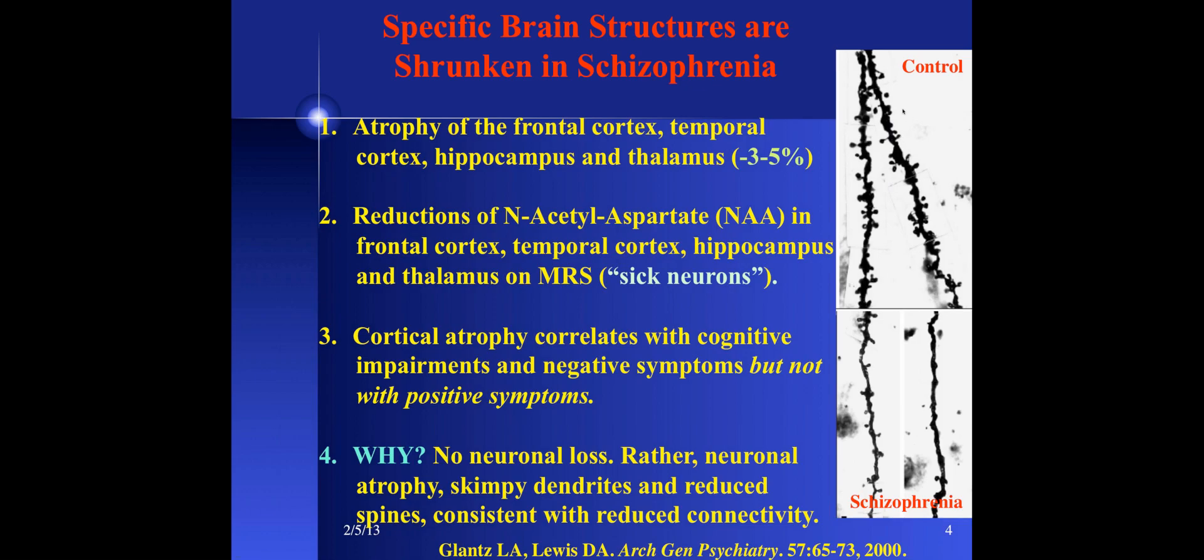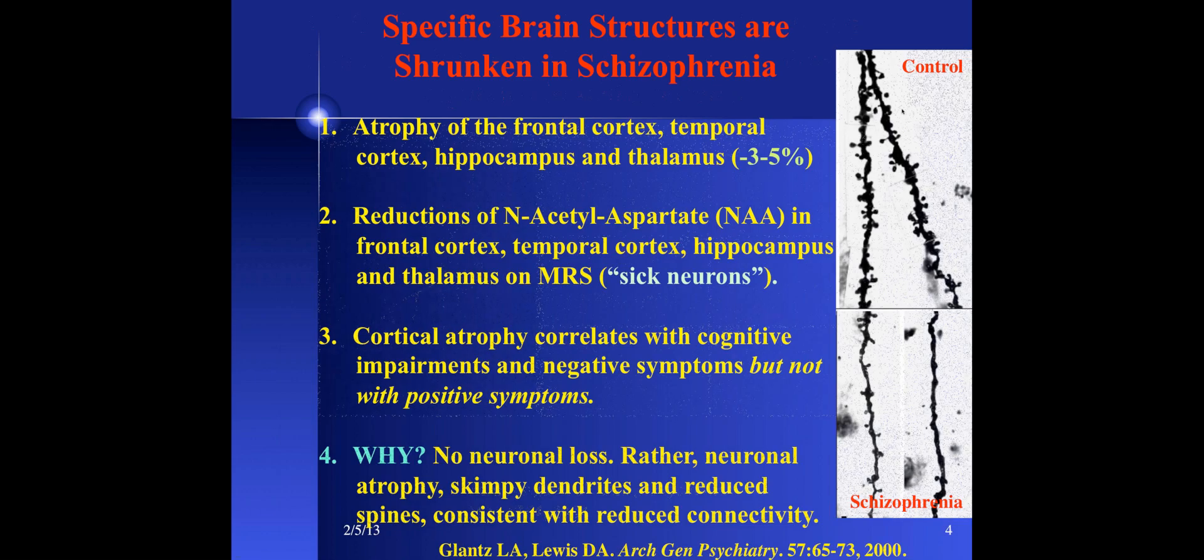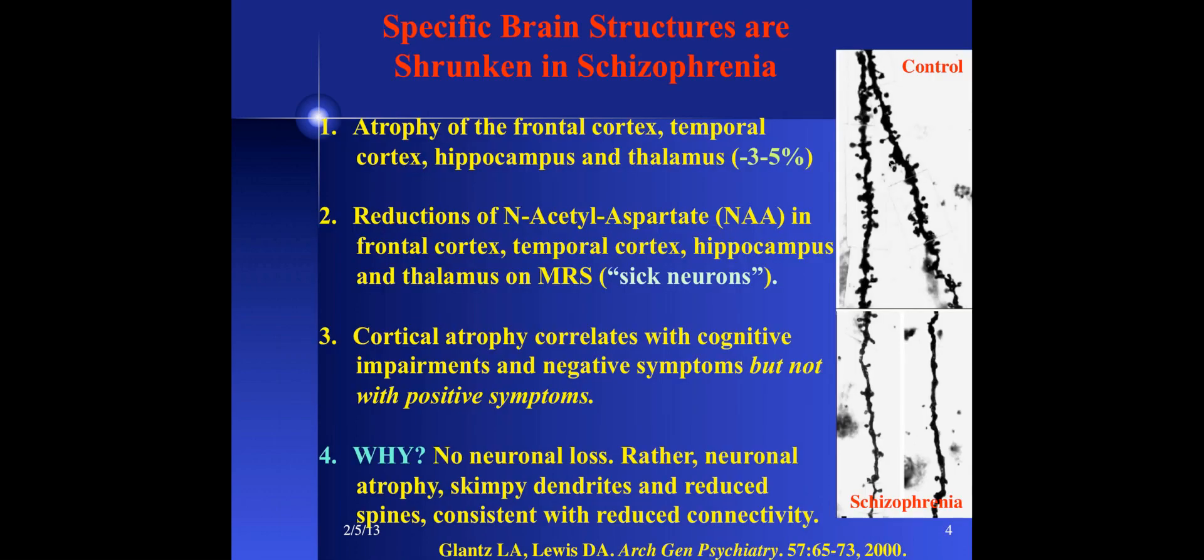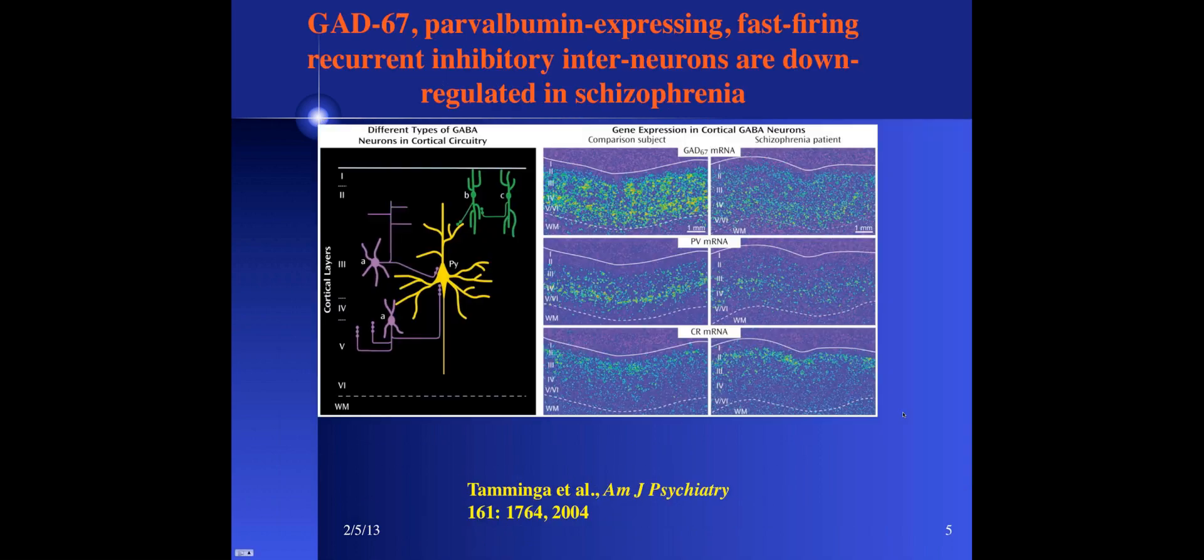It's the positive symptoms that are responsive to the antipsychotics that we've had for over 50 years to treat our patients. Unfortunately, the more enduring negative symptoms and cognitive deficits contribute to the persistent disability because they're largely unresponsive to antipsychotic drugs. Over the years, I think compelling evidence has developed on highly reproducible cortical pathology in schizophrenia.